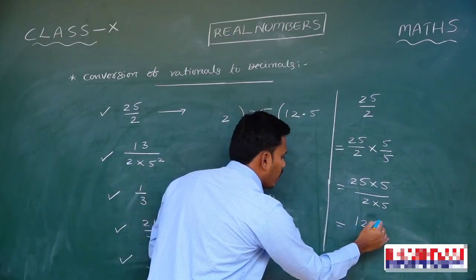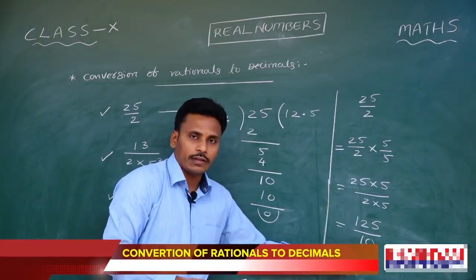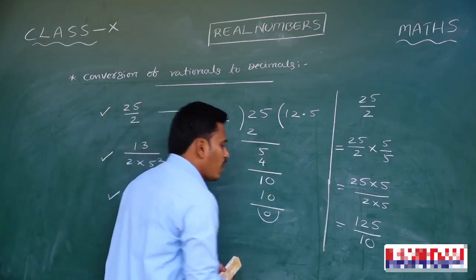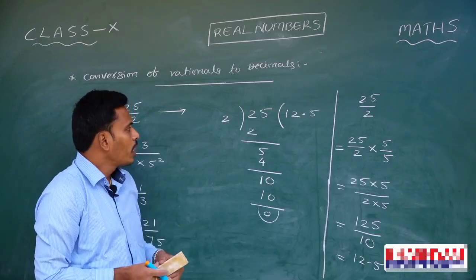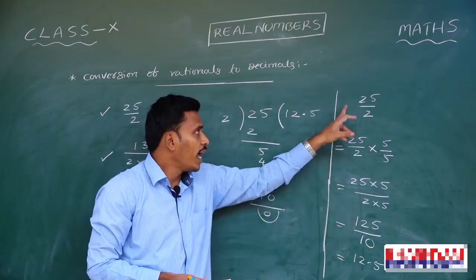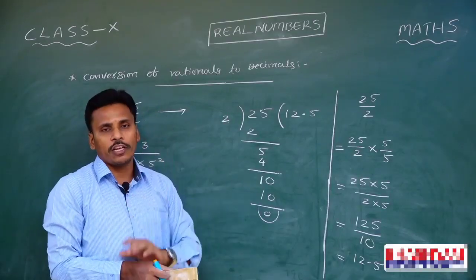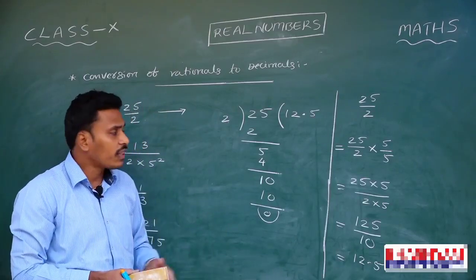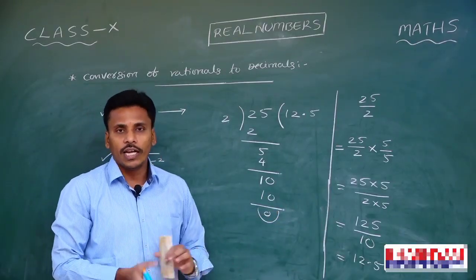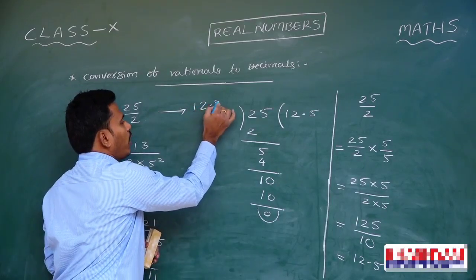25 into 5 is 125, and 2 into 5 is 10. Now we have 125 by 10, which is 10 power 1. There is one zero in the denominator, so we place the decimal point before one digit of the numerator, giving us 12.5. This is the method of converting a rational number into decimal without actual division. For examination purposes we use this method, though for some rational numbers where the denominator cannot be made a power of 10, we must use the division process.